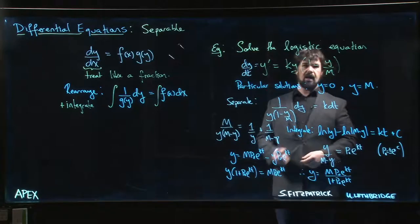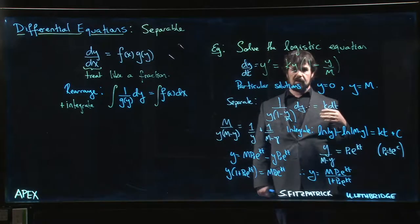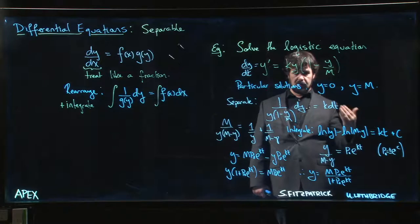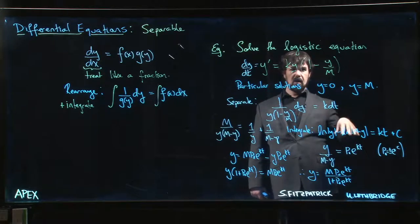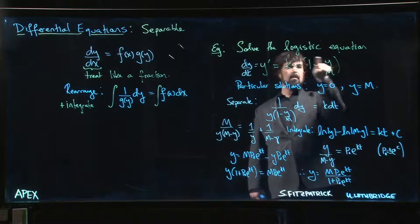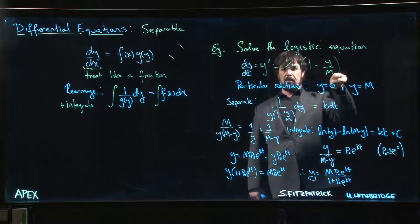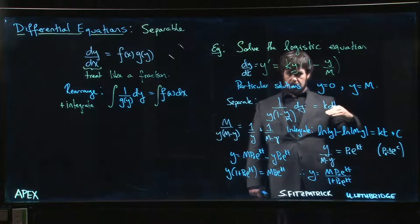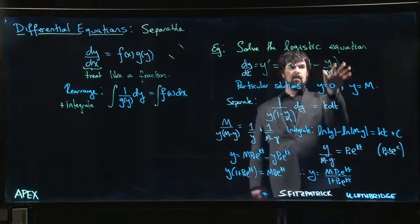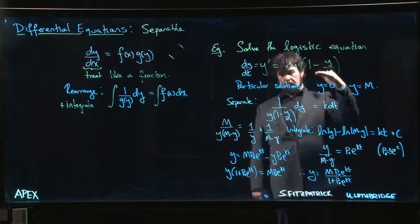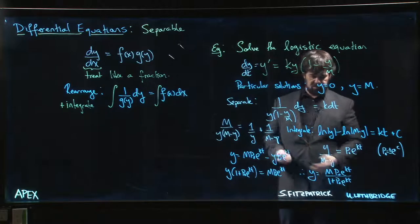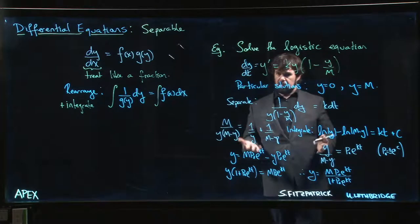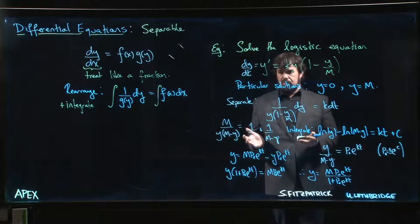If you start out with a population where y is bigger than M, if it's bigger than that carrying capacity, well what's going to happen is the population is going to decline until it comes down to the maximum, because if y is bigger than M, that's going to make y prime negative. Things are going to come down. If y is less than M, this is all positive, things are going to come up.